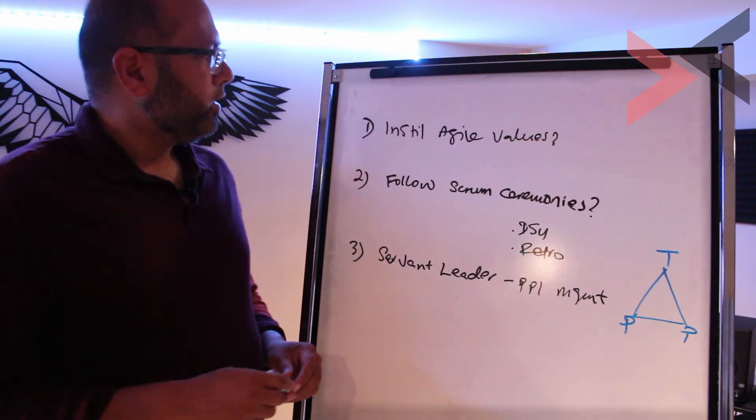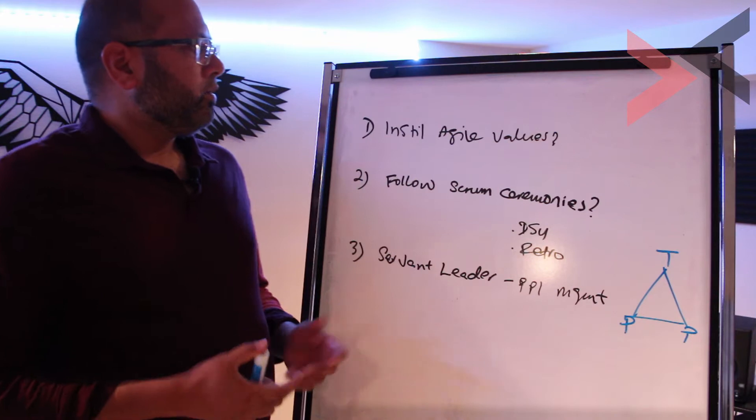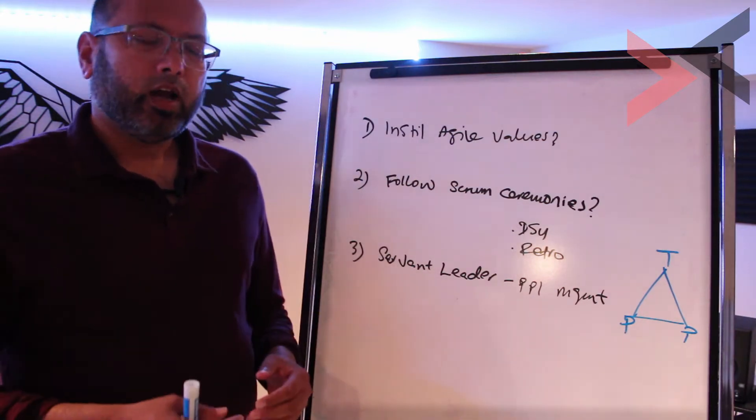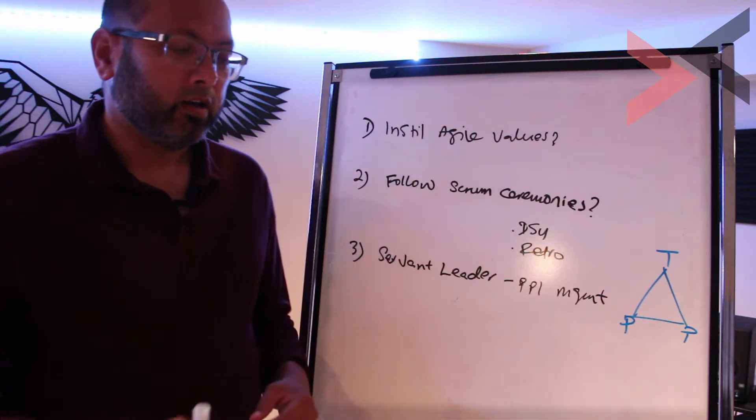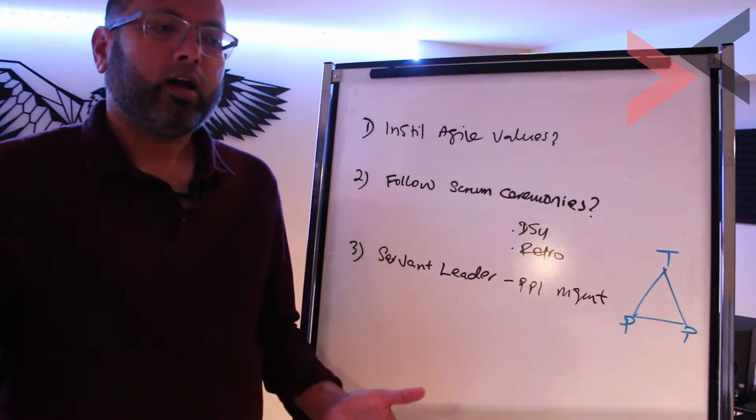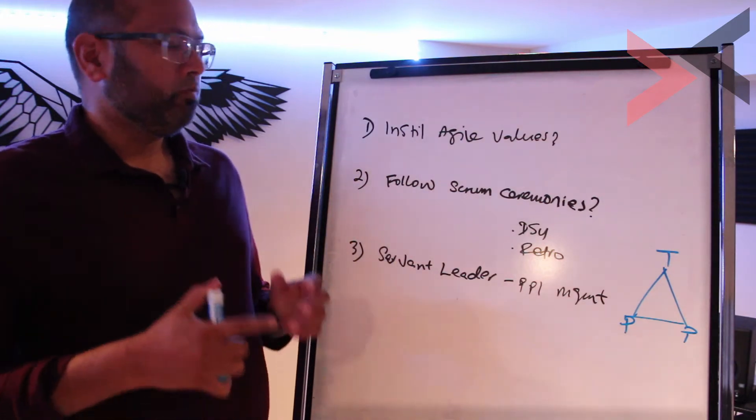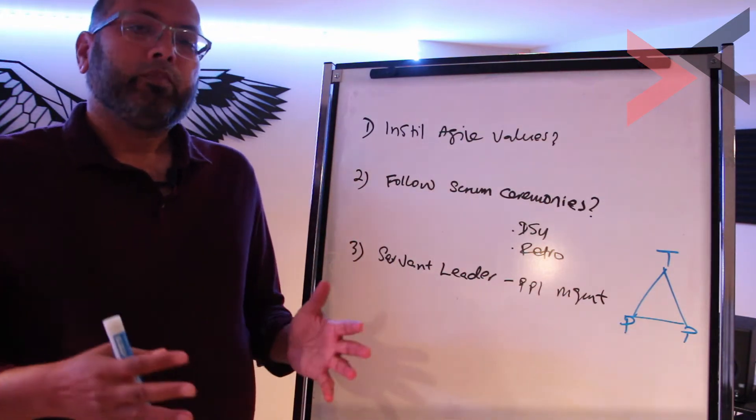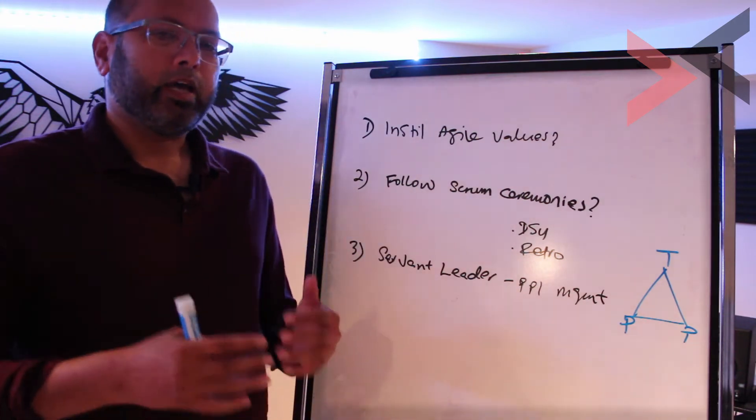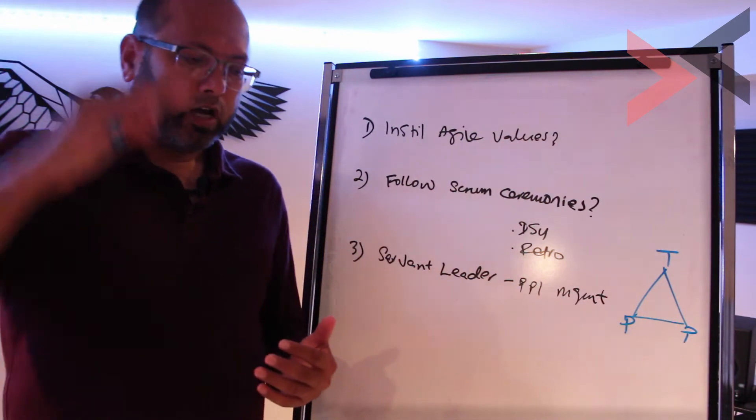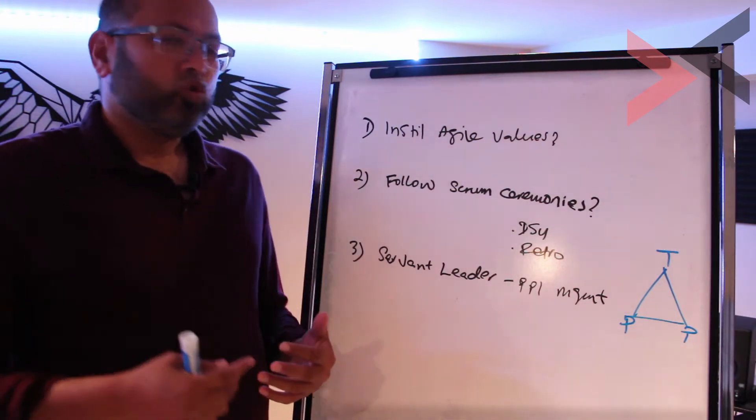First question: they might ask you 'How do you instill agile values into an organization or into a team that may not be agile minded, that might be stuck in the waterfall kind of thinking?' So the answer would be: well first of all, the organization must have made their mind from the management level down to the actual scrum team that there is an appetite, there is a reason for them to do agile, and therefore they want to implement agile. They will say 'we are an agile shop.'